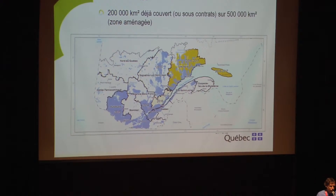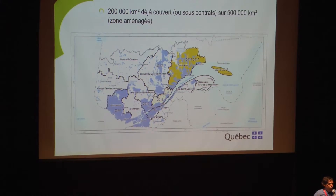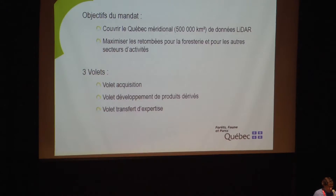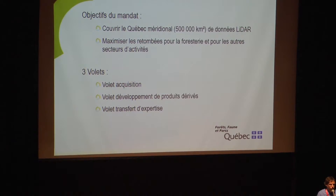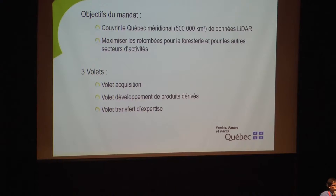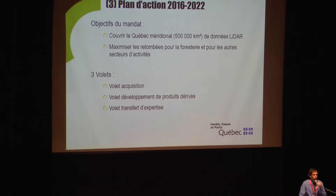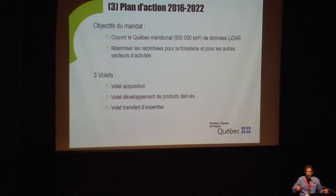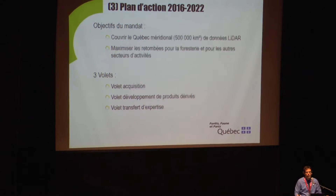The 500,000 square kilometers is the part we are targeting for Quebec. The action plan for 2016 to 2022 is related to what Mr. Brissard was explaining. The government is financing part of it, and we'd like to get this 500,000 square kilometers covered. We'd like to maximize the returns for forestry and other activity sectors. To attain these objectives, we have three components — the first is an acquisition component.